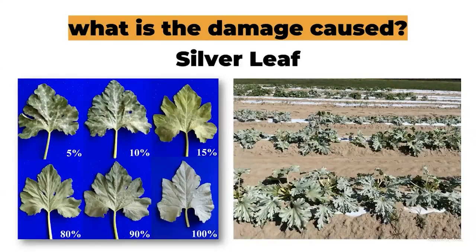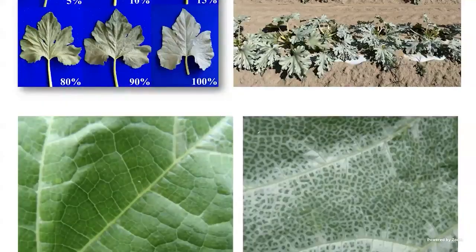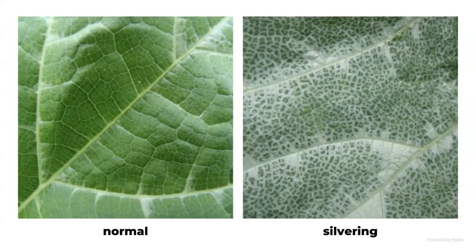For cucurbits and tomatoes, whiteflies cause leaf damage. The most common symptom in cucurbits like zucchini is silverleaf — the leaves turn silver, losing their green color. This impacts the plant's photosynthesis and consequently will impact yield. The amount of yield loss depends on the severity of the damage, but controlling the insect will minimize that damage.